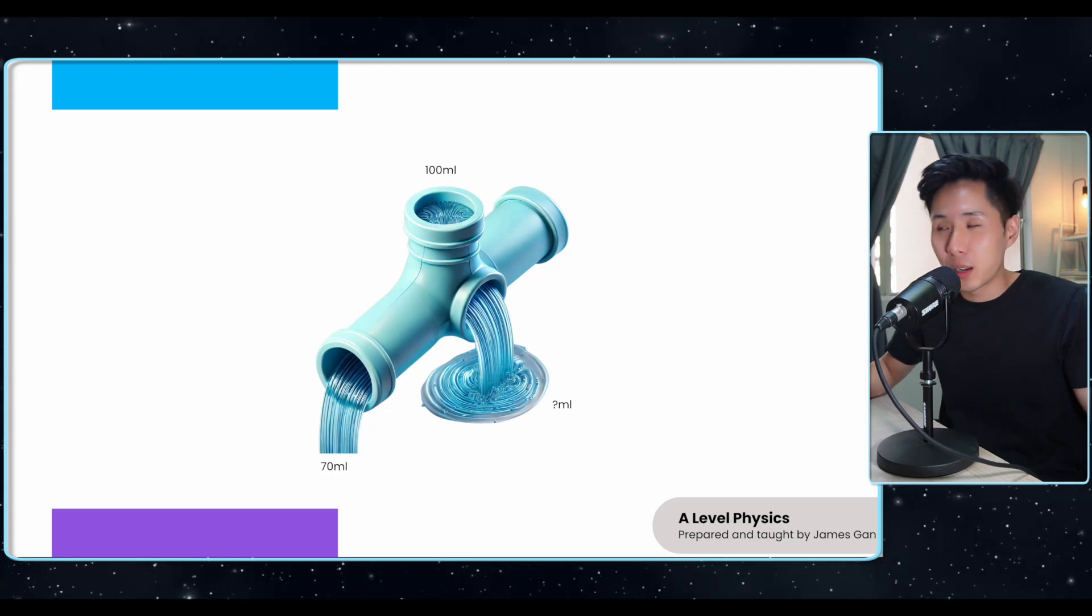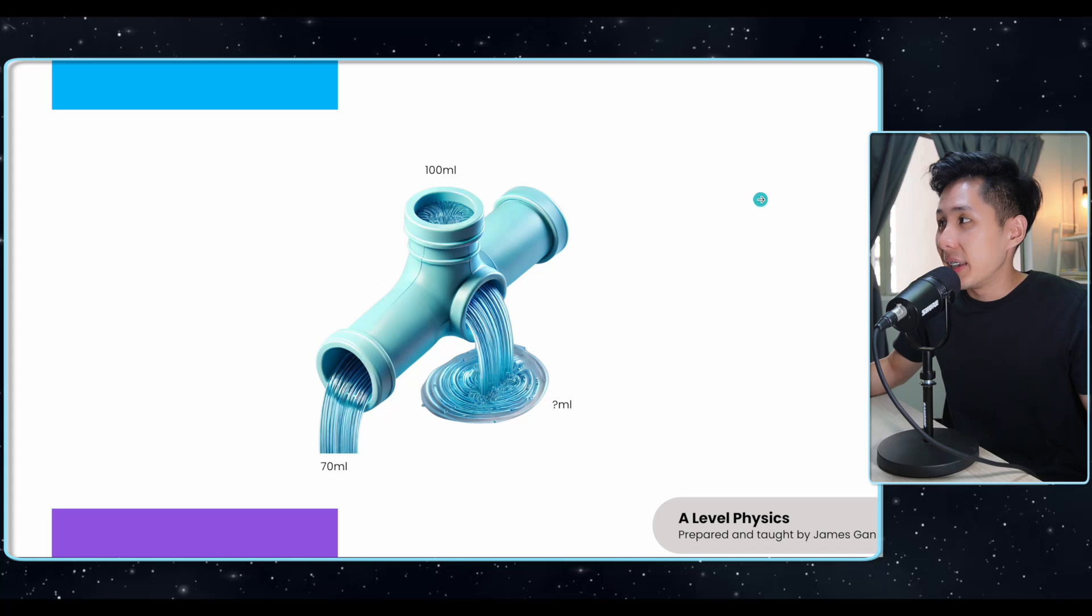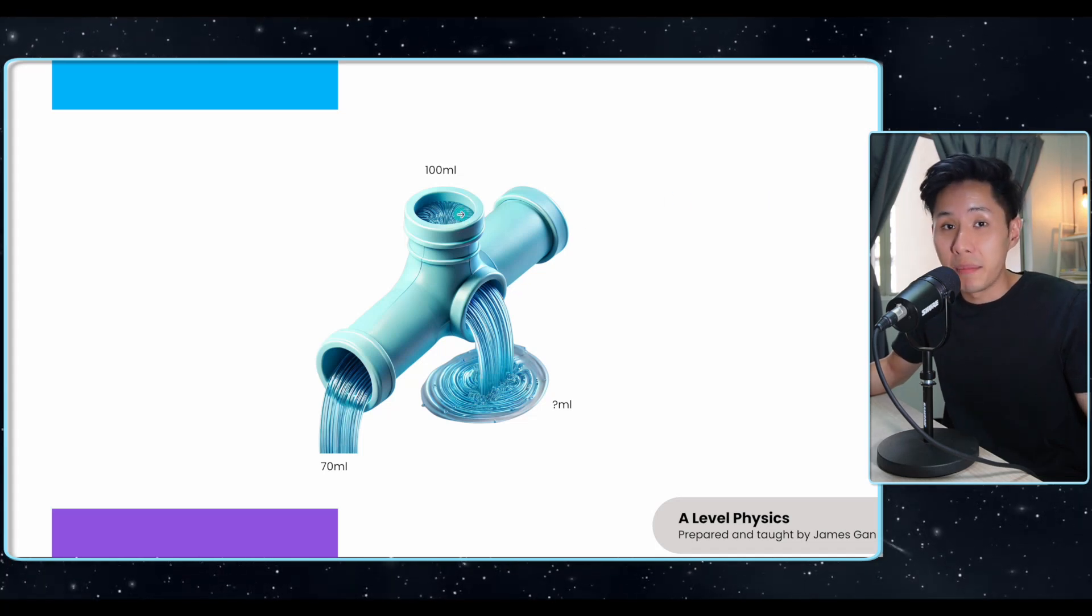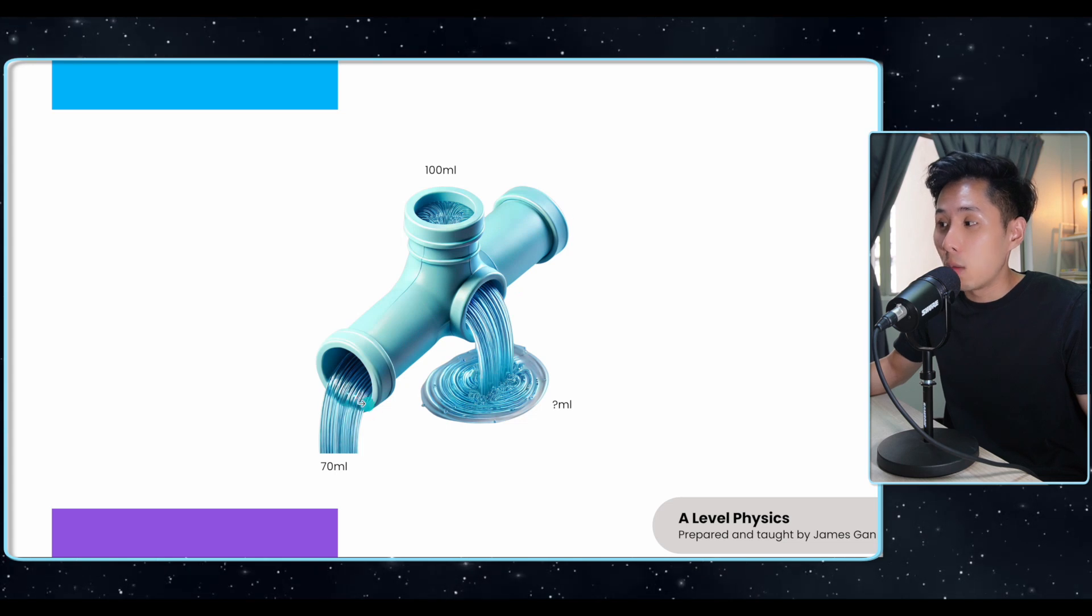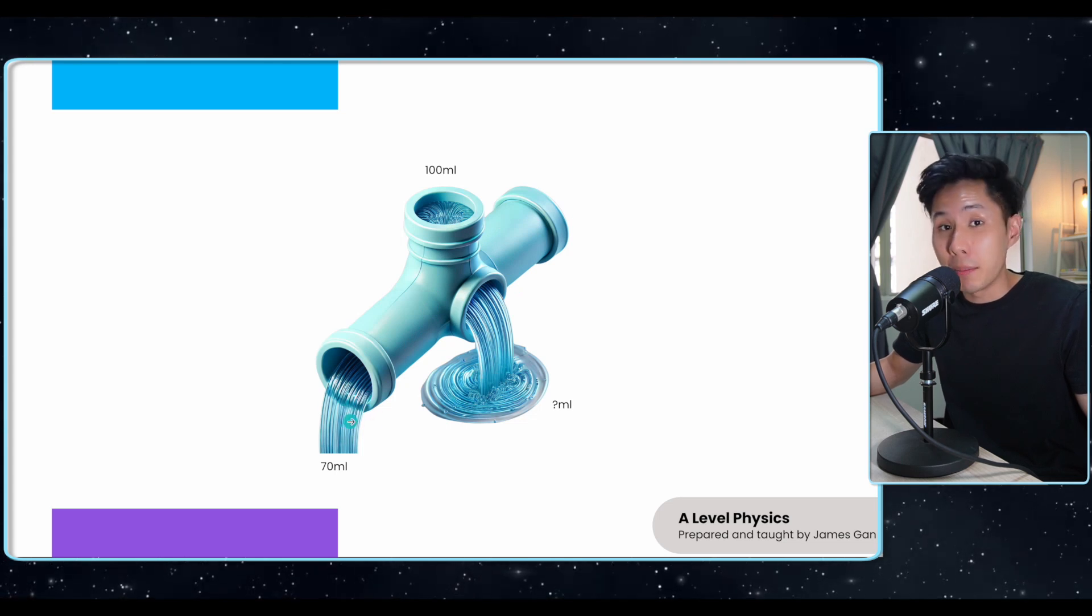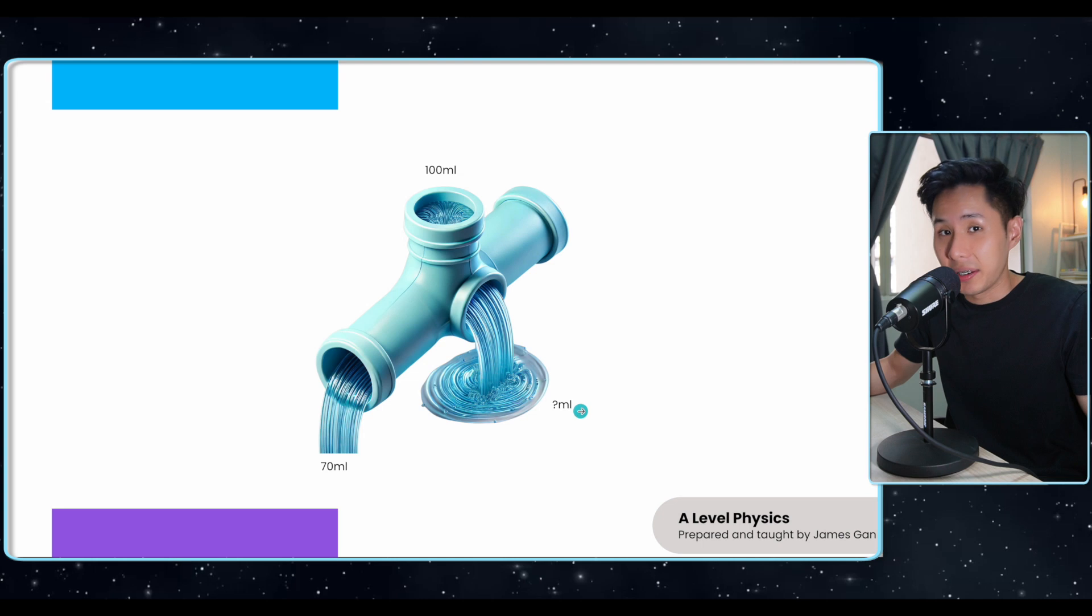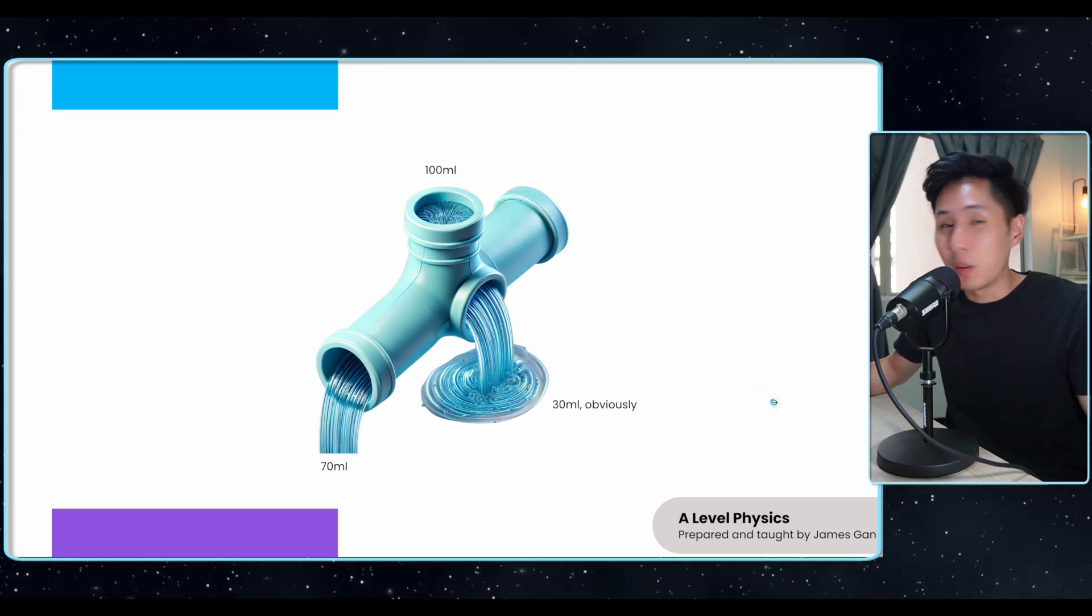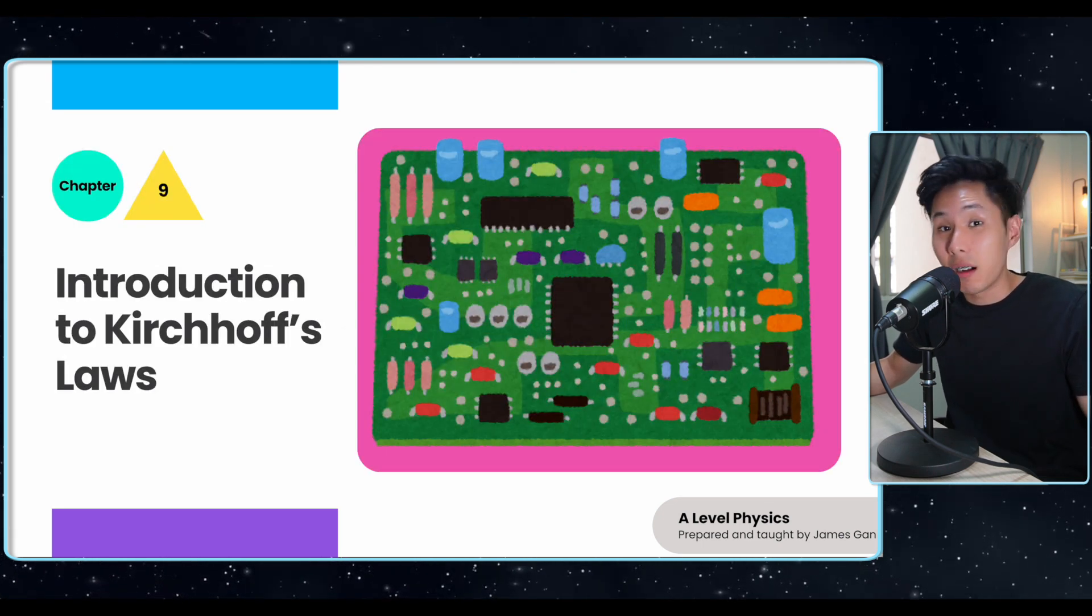Hello everybody, welcome back to this channel. A quick question before we begin our video. Now, look at this diagram here. Let's say the incoming flow of water is 100 ml, and the output of one of the pipe is 70 ml. What would be the output here? Well, 30 ml, obviously. And that's the essence of what we're going to learn today called Kirchhoff Law.